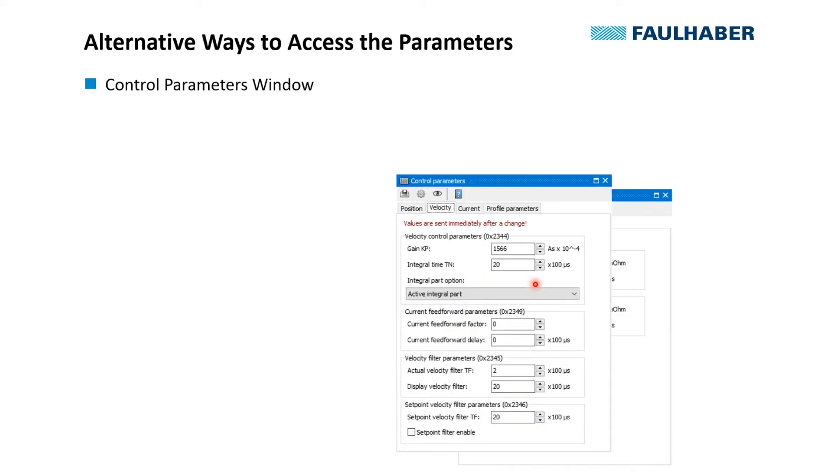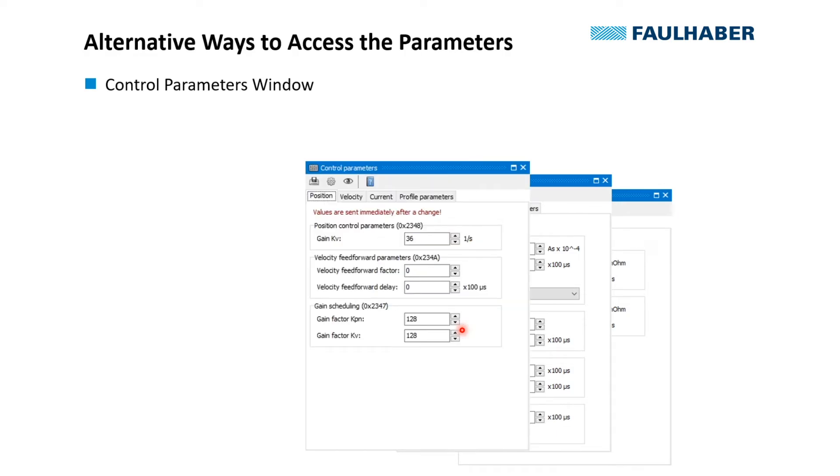Then the velocity loop, and we typically only change the gain here and activate or deactivate the feed forward for the current loop. And then the position loop, again it's the gain and the feed forward that would be activated here.